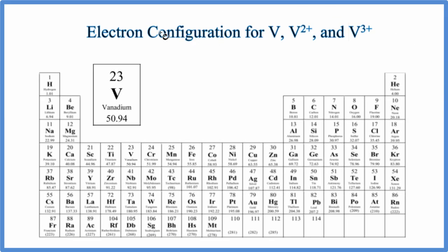In this video we'll write the electron configuration for V, V2+, and V3+. First, we're going to do just the vanadium. This is a neutral element. All of the elements on the periodic table are neutral.